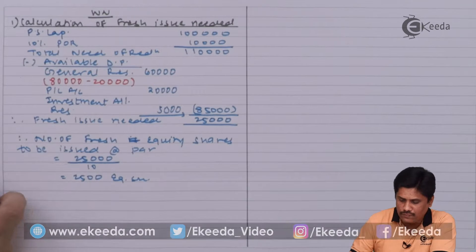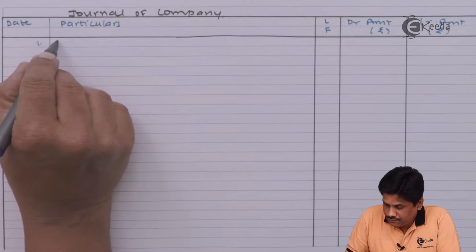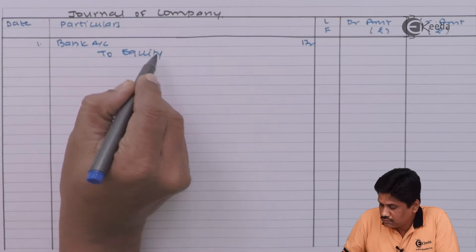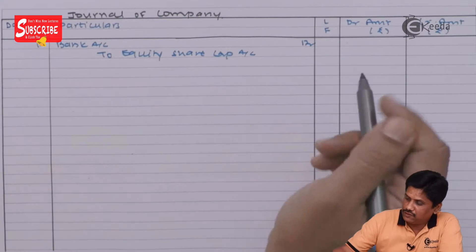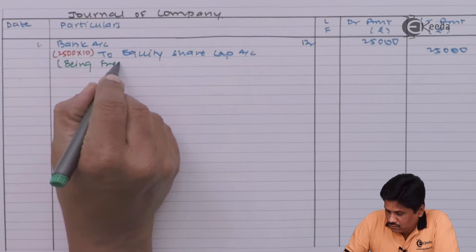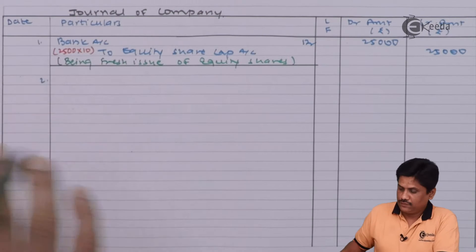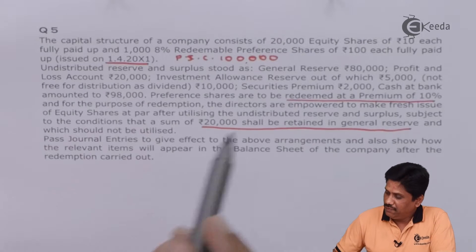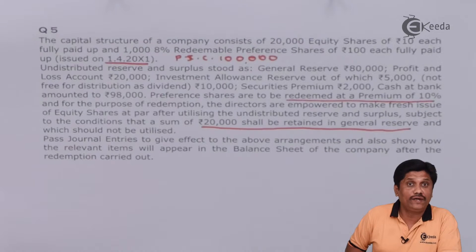Now we will go with the journal entries. Entry number one: for making a fresh issue — Bank Account Dr. to Equity Share Capital Account Rs.25,000. Entry number two: to create Capital Redemption Reserve (CRR). Fresh issue is Rs.25,000; preference capital to be redeemed is Rs.1,00,000; so CRR to be created = Rs.1,00,000 minus Rs.25,000 = Rs.75,000.